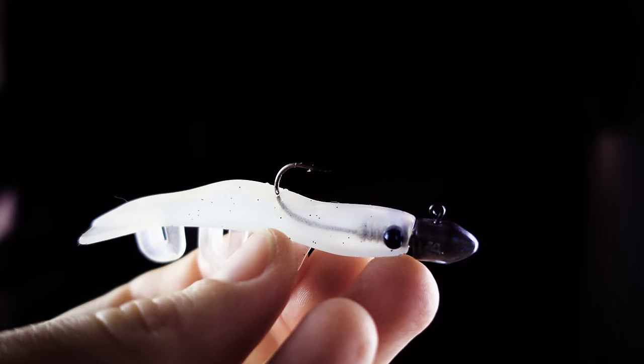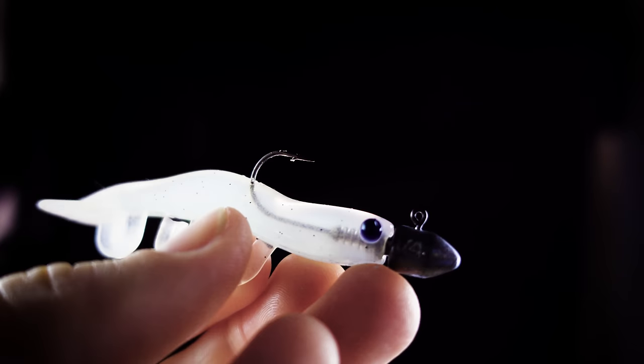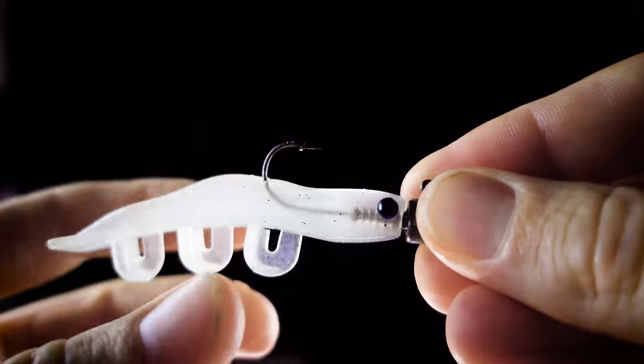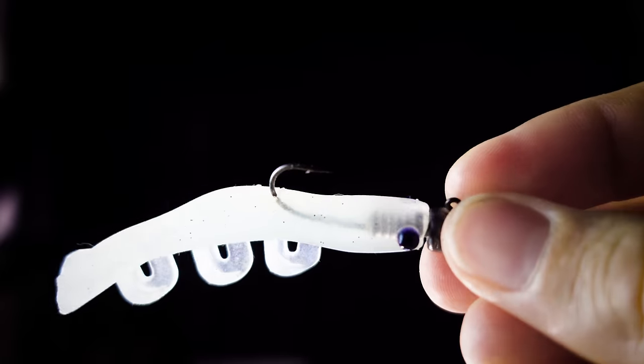So that's it. You make a nick in the top of the plastic right where you think it's going to pop out and you feed it through until she pops right out at that point. Perfectly rigged every time.